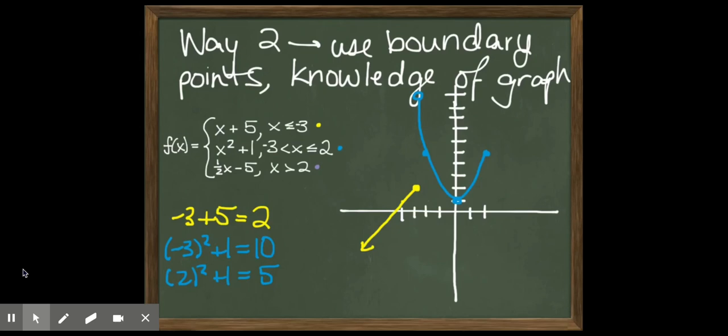And then finally, we have the line. I plug in 2 to the line, I get negative 4. And then I use the fact that the slope is 1 half to go up 1 over 2. And I know I'm going to the right, because it says x greater than 2. And that's pretty much it. Now I don't have to erase anything. I have all three pieces and I've reflected my entire graph.